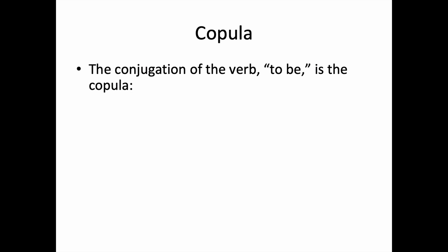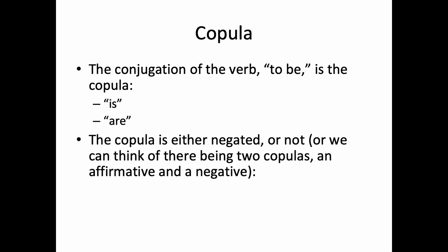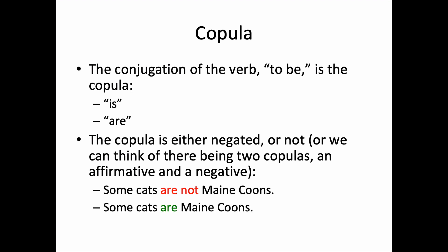Lastly, the copula is the conjugation of the verb 'to be.' It's what separates but also relates the subject class from the predicate class. We have 'is' and 'are.' The copula is either negated or not — or we can think of there being two copulas: an affirmative copula and a negative copula. So we have 'some cats are not Maine Coons' and 'some cats are Maine Coons.' In each of these sentences, the conjugation of the verb 'to be' serves as the copula.